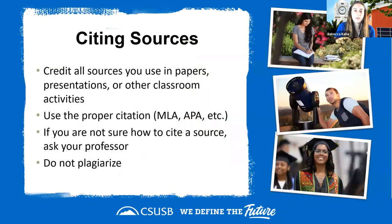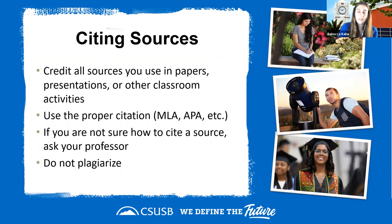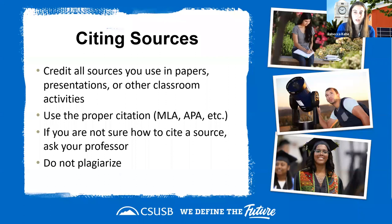Citing sources is a very important part of US academics. When writing any research paper, you must cite any resources or ideas you use that come from outside your own understanding. Any ideas, theories, or notions you cover in a paper or presentation must credit whoever came up with them. There are roughly eight to ten citation styles, with MLA, APA, and Chicago Style being the three most common.